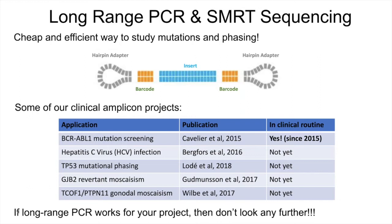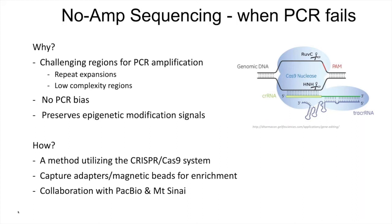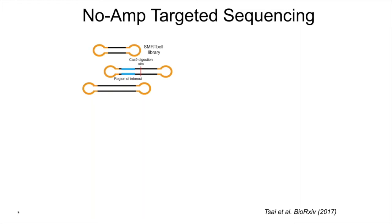If PCR doesn't work well — when you're looking at regions that are very repetitive or otherwise difficult to amplify using PCR — you might need other approaches. We have been involved in a project that started as a collaboration with PacBio to use the CRISPR-Cas9 system to study these types of regions. The way this method works is that we start from SMRTbell molecules as described before. You then have a region of interest — displayed by blue lines — which could be a repeat region or some other region of the genome that is difficult to amplify.